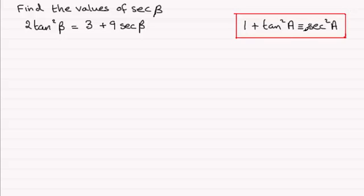And so if we replace θ with β then we've therefore got 2 and in place the tan squared β is going to be sec squared β minus 1. So just put that there, sec squared β minus 1. And this is going to be equal then to 3 plus 9secβ.